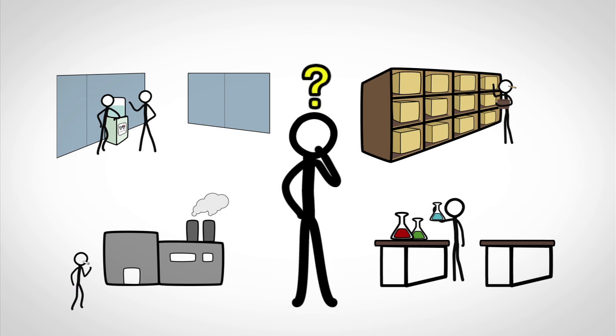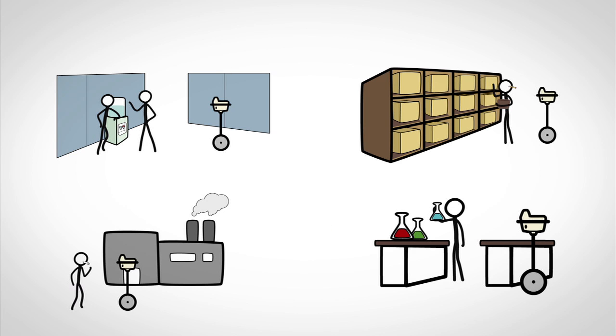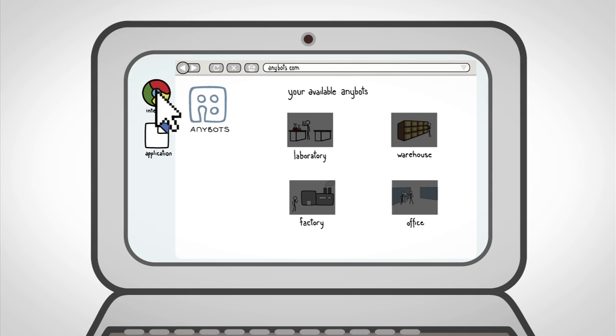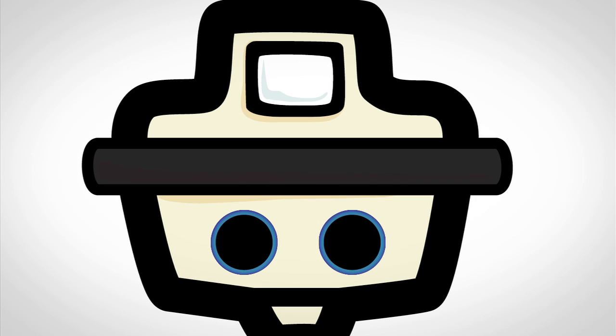How? Well, first get as many AnyBots as places you want to be, then all you need is a laptop and any web browser to log in to your AnyBot of choice. When you log in, your AnyBot activates. Its eyes illuminate telling the world that you are now there.